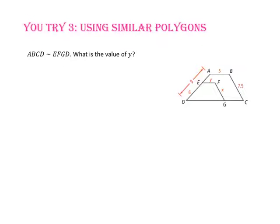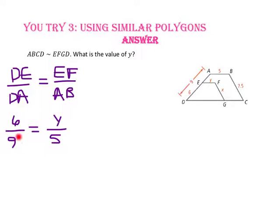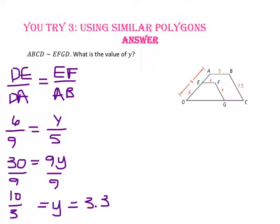Pause the video and do You Try number 3. Find the value of Y. Using the same first ratio, side DE to side DA, or 6 to 9, set it equal to side EF to AB. Using the cross product property, we get 30 equals 9Y. Dividing both sides by 9, Y equals 10 over 3, or approximately 3.3.